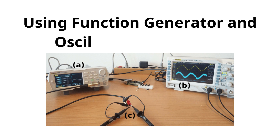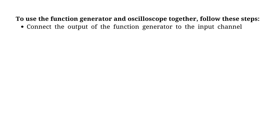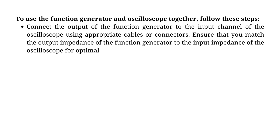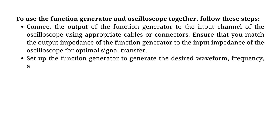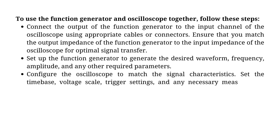To use the function generator and oscilloscope together, follow these steps. Connect the output of the function generator to the input channel of the oscilloscope using appropriate cables or connectors. Ensure that you match the output impedance of the function generator to the input impedance of the oscilloscope for optimal signal transfer. Set up the function generator to generate the desired waveform, frequency, amplitude, and any other required parameters. Configure the oscilloscope to match the signal characteristics — set the time base, voltage scale, trigger settings, and any necessary measurement options.